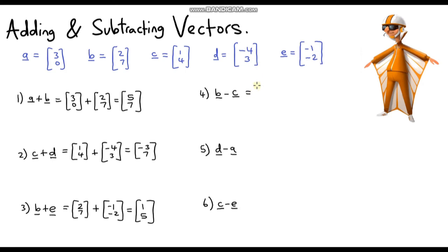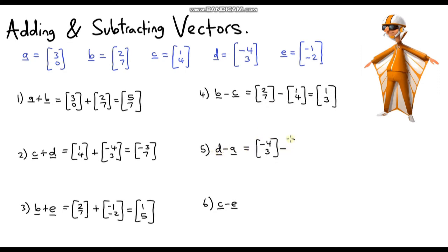Question 4: vector B minus vector C. We subtract the corresponding components. So 2 subtract 1 is 1, and 7 subtract 4 is 3. Answer: (1, 3). Question 5: vector D minus vector A. Our answer will be negative 4 subtract 3, which is negative 7, and 3 subtract 0, which is 3. So the answer is (-7, 3).